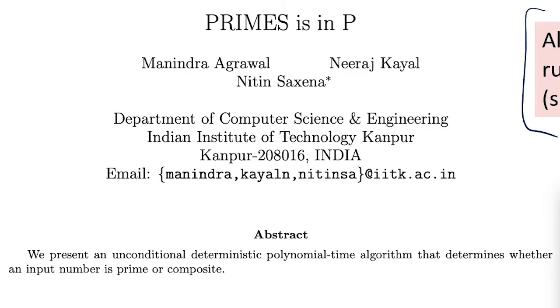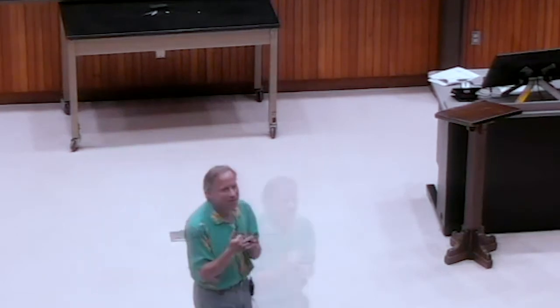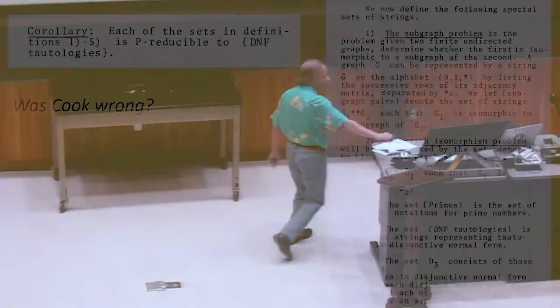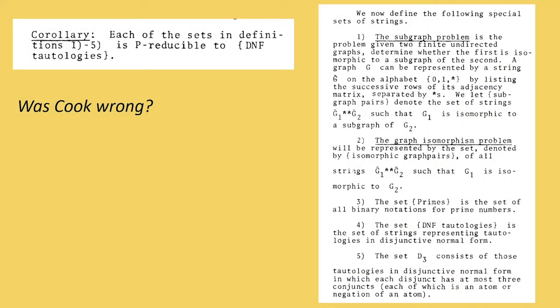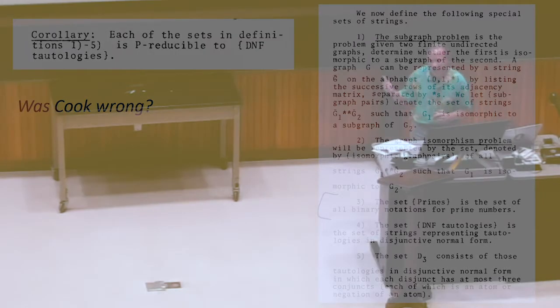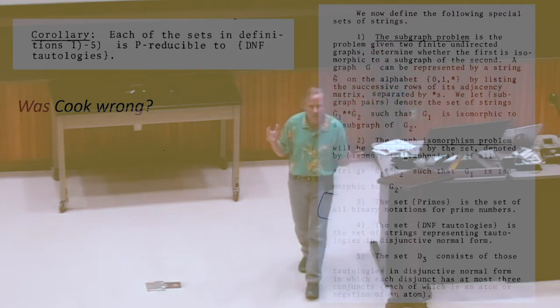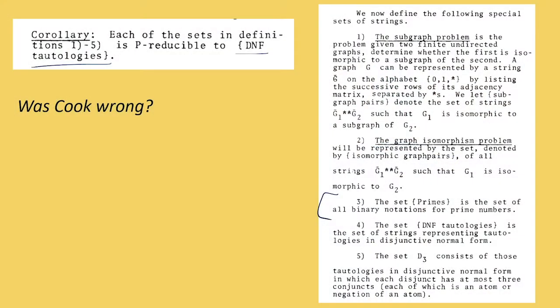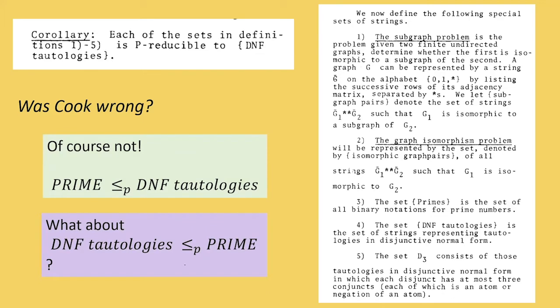Does this mean Cook was wrong? If he had claimed primes was NP-complete or NP-hard, that would be wrong — it would imply P equals NP, which finding a polynomial time algorithm for primes clearly did not do. But Cook was only claiming a reduction in the other direction: that we can use DNF tautologies to solve primes. The fact that primes is in P just means that's a very silly way to solve primes, since we have a fast algorithm. That's the important thing about the direction of reduction — which problem is harder.